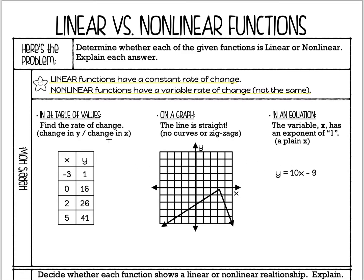When we have a table of values, we figure out what the rate of change is — that's change in Y over change in X. Looking at the table, from 1 to 16 that's a plus 15 on the Y side, and from negative 3 to 0 that's a plus 3 on the X side. So our change in Y over change in X is 15 over 3, which equals 5.